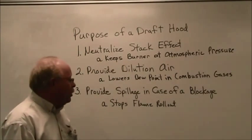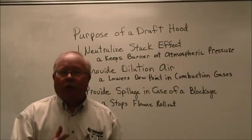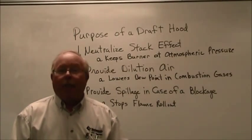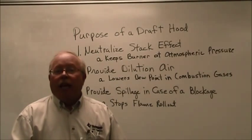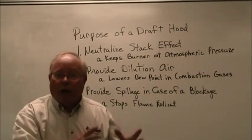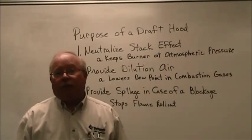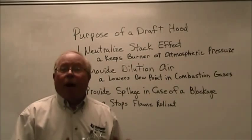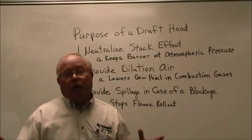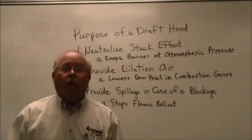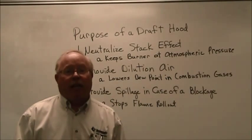Last of all, provide spillage in case of blockage. We want to stop severe flame rollout. If there were no draft diverter and something like a squirrel's nest, bird's nest, or debris were to choke off the products of combustion from making their way outside, that flue gas would build up and surround the burner itself, forcing the flame outside the furnace and causing a severe flame rollout. The opening of the draft diverter allows the flue gases to escape into the room. Ideally, we'll have what's called a spill switch — a safety mounted on the draft diverter which will shut down the gas valve if this is happening.